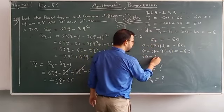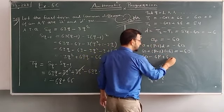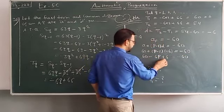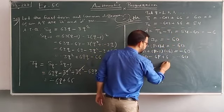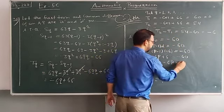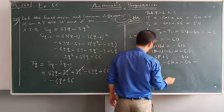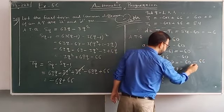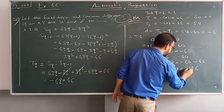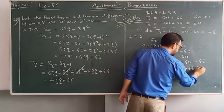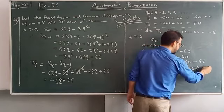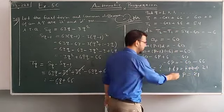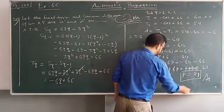Solving: 60 minus 6P plus 6 equals minus 60. That's 66. Shifting: minus 6P equals minus 60 minus 66, which is minus 126. Cancel: minus 6P equals minus 126, so P equals 21. P value is 21. This is our answer.